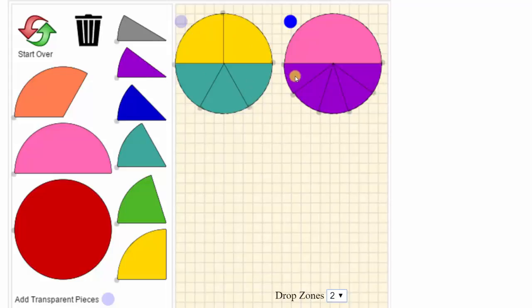We can rotate a fraction piece in the drop zone by clicking on the handle, which are the points on the outer part of each fraction piece located here.